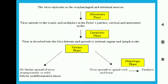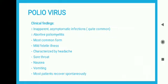The virus replicates in the oropharyngeal and intestinal mucosa, then spreads to the tonsils and multiplies in the Peyer's patches and cervical mesenteric nodes. The virus is then absorbed into the bloodstream and spreads to internal organs and lymph nodes — the viremia phase. With no further spread, the result is asymptomatic or mild febrile undifferentiated illness; alternatively, the virus spreads to the spinal cord and causes muscle paralysis.